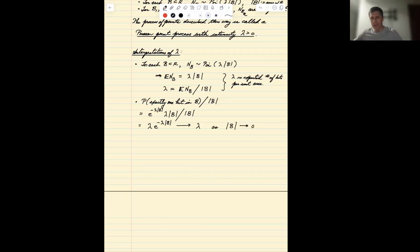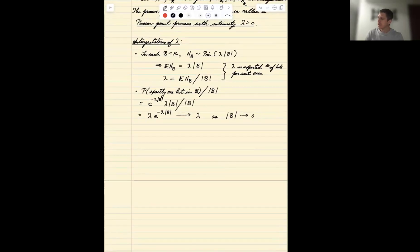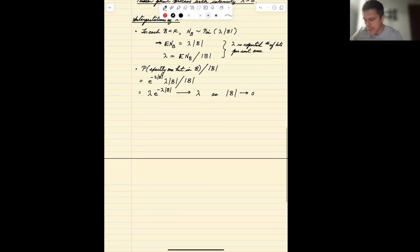This converges, this gets closer and closer to lambda as the size of B goes to zero. So as we shrink B down, the probability of exactly one hit in B relative to the size of B is converging to lambda. So lambda is the probability of having exactly one hit per unit area as the area tends to zero, as the area gets smaller and smaller.